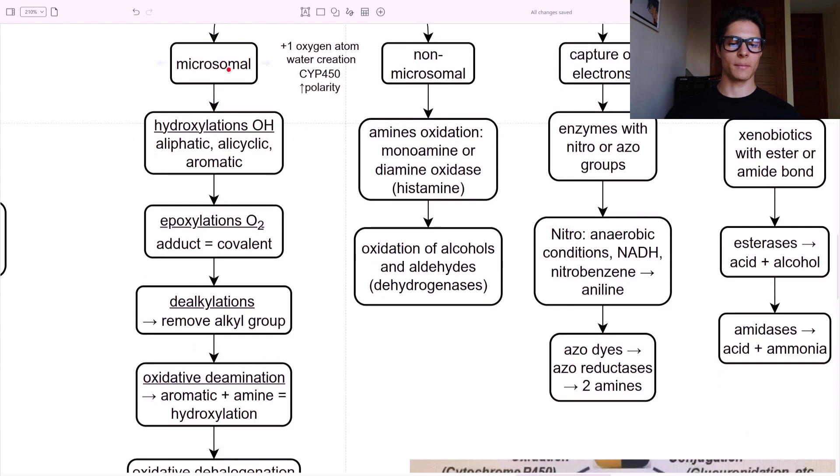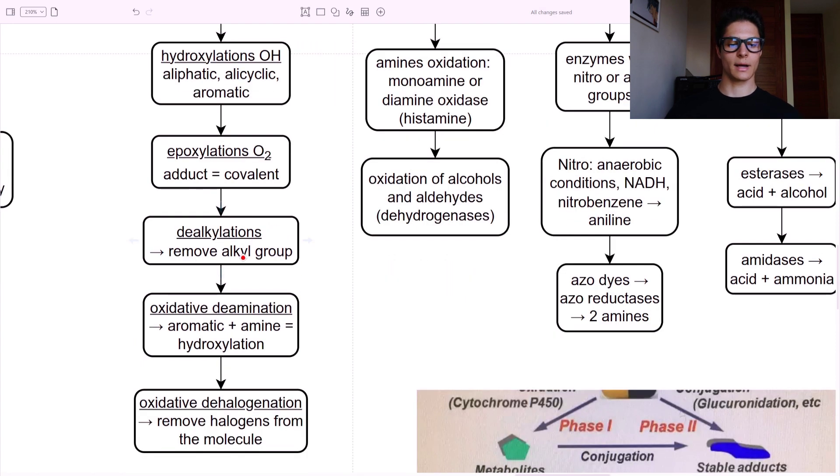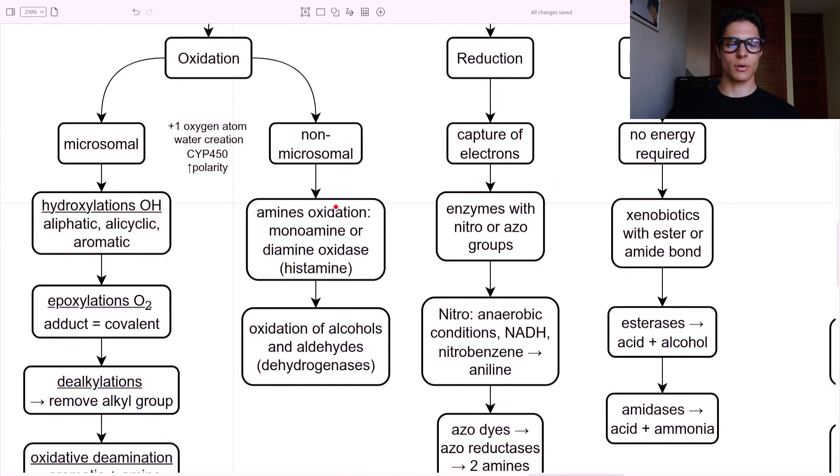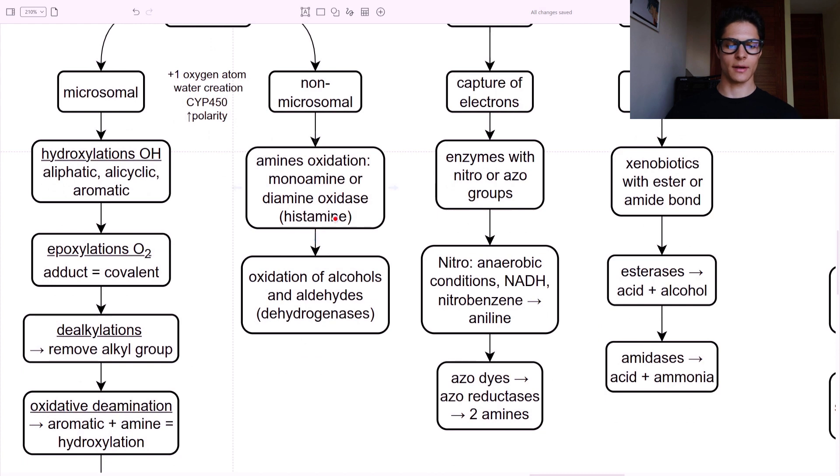So what we do here is, for example, in the microsomal reactions, we have the hydroxylations - aliphatic, alicyclic, or aromatic. Epoxidations, including O2. And when we use O2, we create an adduct, which is a covalent binding to the molecule. The dealkylations, when we remove an alkyl group and bring an oxygen to the molecule. Oxidative deamination - this is an aromatic group plus an amine that will form a hydroxylation. And then the oxidative dehalogenation. This is basically to remove halogens from the molecule. The non-microsomal - so amines oxidation, monoamine or diamine oxidase, creation of histamine. Histamine is involved in here. And oxidation of alcohols and aldehydes using dehydrogenases. For example, alcohol dehydrogenase.